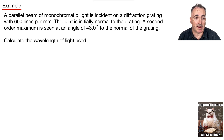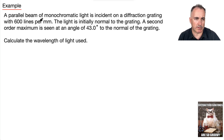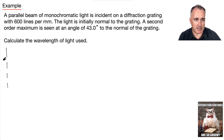Let's do an example with a diffraction grating. We've got a parallel beam of monochromatic light — just one wavelength — incident on a diffraction grating with 600 lines per millimeter. The light is initially normal to the grating. I'll draw my little grating, and this distance between the holes is D.